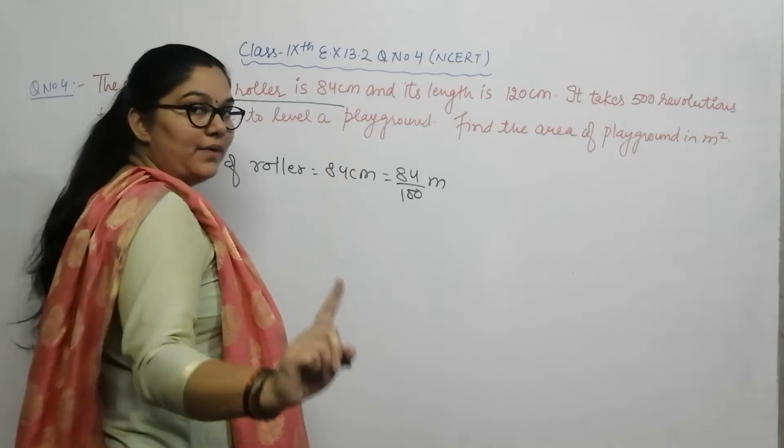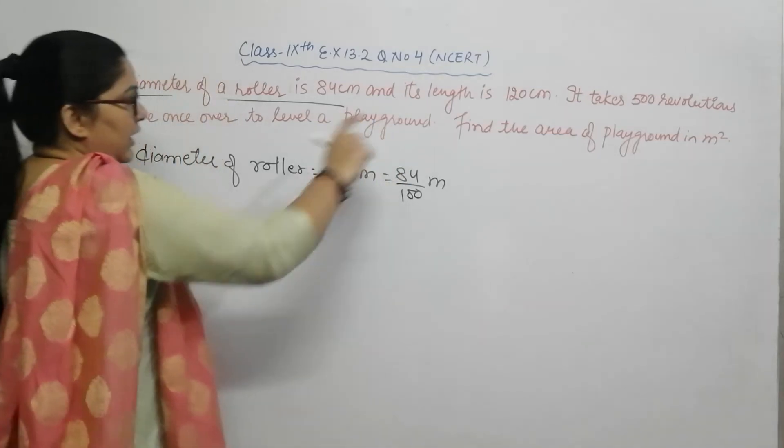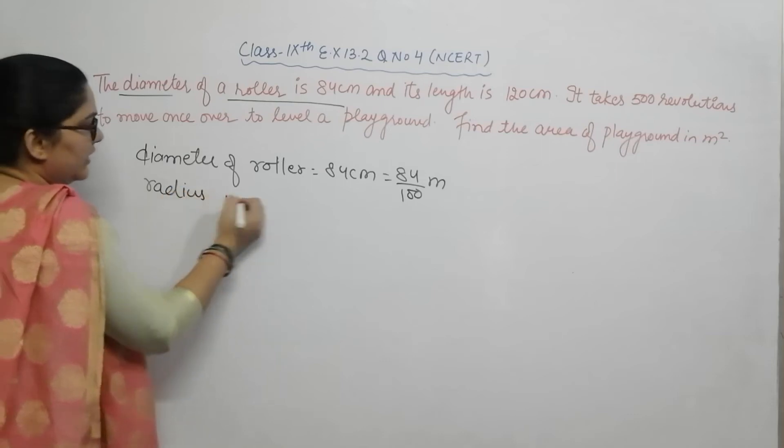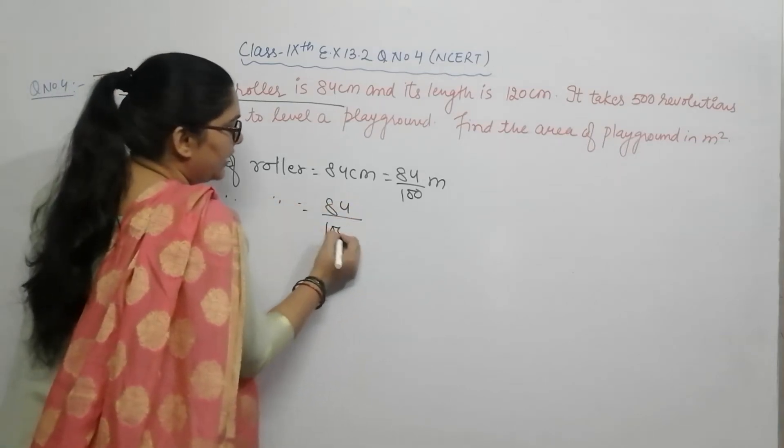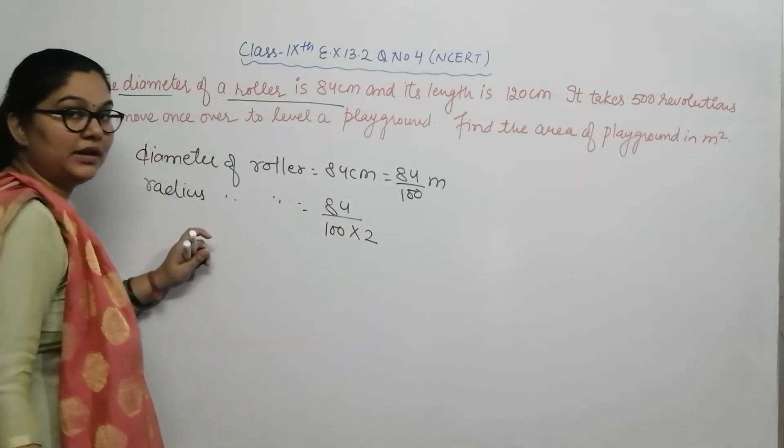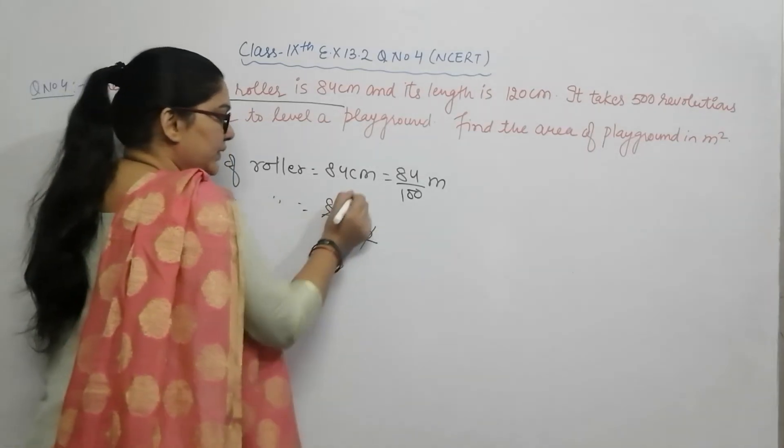is equal to 1 by 100 meter. Now we have to change it into radius, so radius of that roller is 84 by 100 divided by 2. When I divide by 2, it becomes 42 by 100 meter.